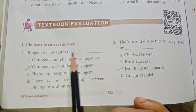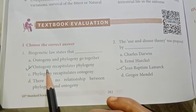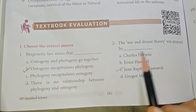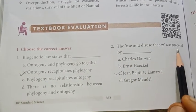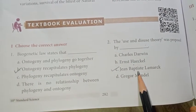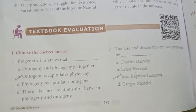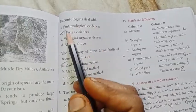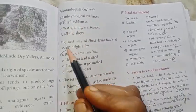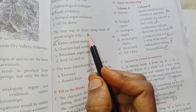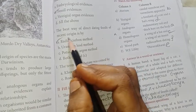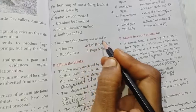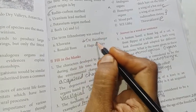First one: Biogenetic law states that — option B — Ontogeny recapitulates Phylogeny. Second: the use and disuse theory was proposed by Jean-Baptiste Lamarck. Third: paleontologists deal with fossil evidences. Number four: the best way of direct dating fossils of recent origin is by the radiocarbon method. Fifth: the term ethnobotany was coined by J.W. Harshberger.